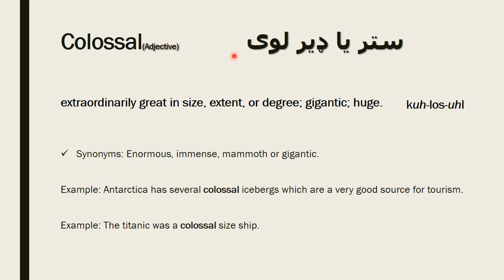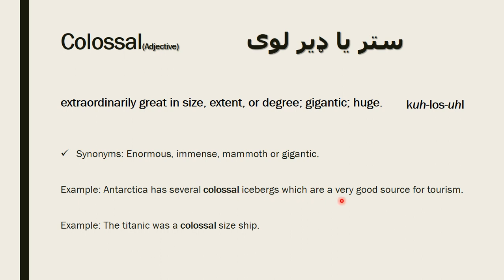The next word is colossal. Colossal is also an adjective according to functionality. It means something that is extremely or extraordinarily great in size, extent, or degree. The pronunciation is 'colossal.' Synonyms are enormous, immense, mammoth, gigantic, and huge. For example: Antarctica has several colossal icebergs which are a very good source for tourism.